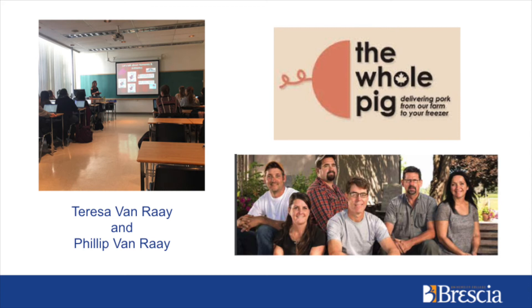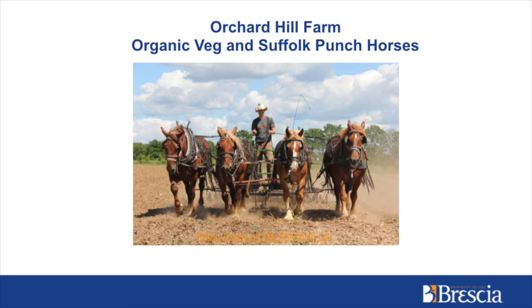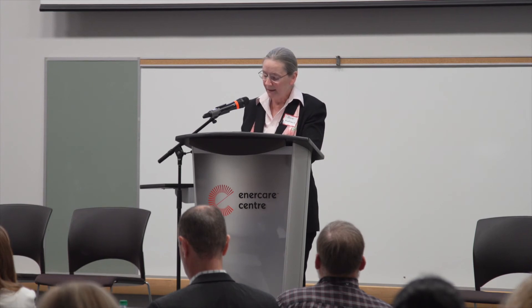For our environment module, local pork producers Theresa Van Ray and her son Philip talked about environmental initiatives on their farm as well as their on-farm retail outlet. Their hope is that these future healthcare professionals will communicate to the public that farmers are dedicated to sustainable food production, as they intend to pass their family farms on to future generations. For the module on local food, I invited the owners of Orchard Hill Farm to talk about their organic farm powered by draft horses. They stopped being a CSA after 21 years and are now grazing a neighbour's herd of beef cattle to return nutrients to the soil, encourage biological activity, and attract insects and birds — an excellent example of synergistic relationships among plants and animals that support sustainable food production.